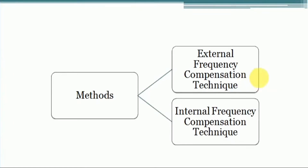In the external frequency compensation technique, by using some compensation network we can convert an uncompensated op-amp circuit to a compensated op-amp circuit. The compensating network used in external frequency compensation is a passive element network — meaning with the use of resistors, capacitors, and inductors, we can easily convert an uncompensated network to a compensated network.